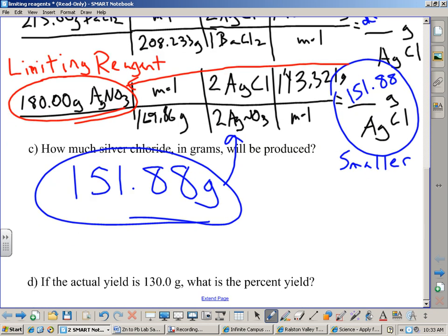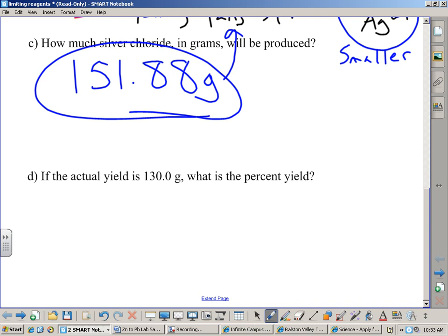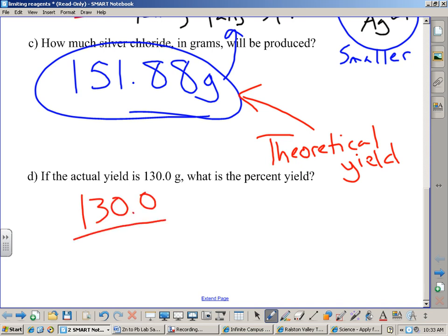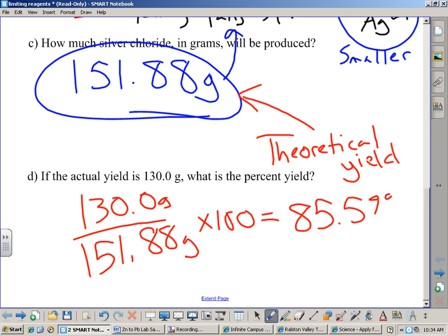Any other questions? All right. One more problem using this set of data, and this one's a review. If the actual yield is 130.0 grams, what is the percent yield? So, this number that we just solved for right here is my what? Yeah. That is the theoretical. So, just to review real quick, since this is a calculation you're going to have to do tonight for homework, 130 grams over 151.88 grams times 100, and we get what? 5, 9, 4, 9, so it would be just 85.59% if we've got four sig figs. We got a couple people that agree with his math? Yeah?